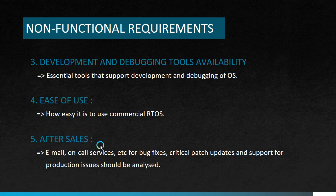Next comes ease of use. How easy it is to use a commercial RTOS is another important feature to consider in the RTOS selection — the embedded product should be easily usable. After that comes after-sales support. For a commercial embedded RTOS, after-sales support is in the form of email and on-call services for bug fixing, critical patch updates, and support for production issues. This should be analyzed for maintenance after the product is delivered to the customer.